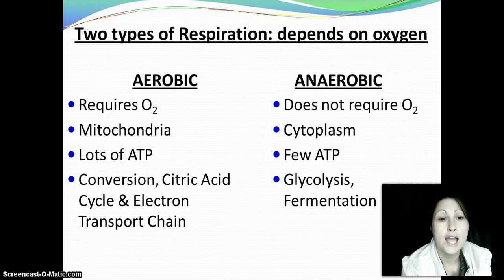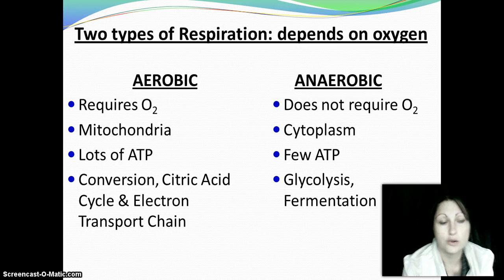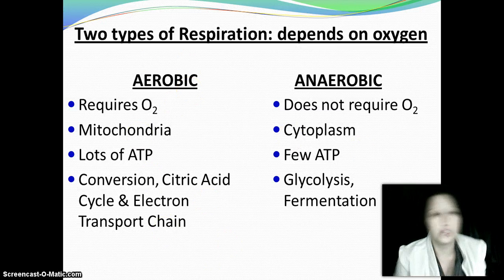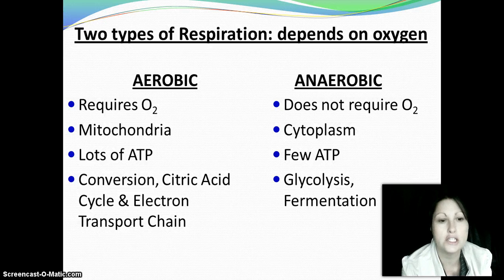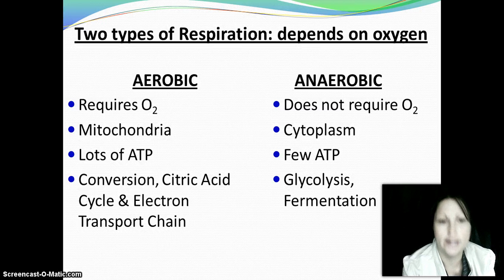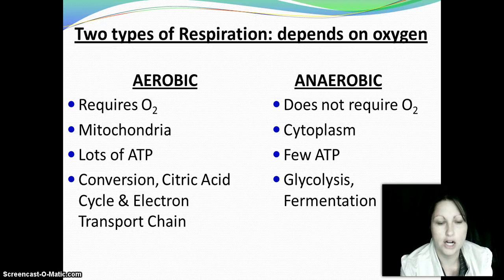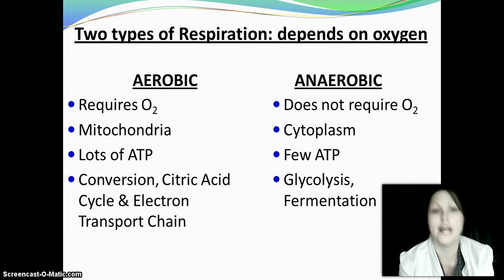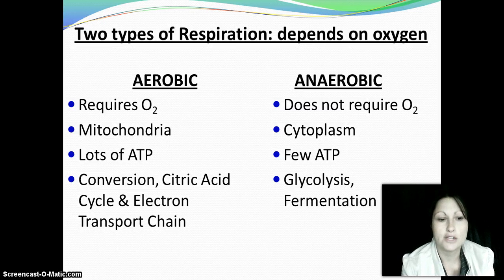There are two types of respiration, and they depend on whether there is enough oxygen available to the cell or not. Over here on the left, aerobic respiration — if you're doing aerobic exercise, you're running, you're jumping, you're using a lot of oxygen. Aerobic respiration also requires oxygen, so aerobic requires oxygen. Aerobic steps always happen in the mitochondria and make lots of ATP. You'll see me refer to this as plan A — it's the ideal plan. The aerobic steps are conversion, the citric acid or Krebs cycle, and the electron transport chain.